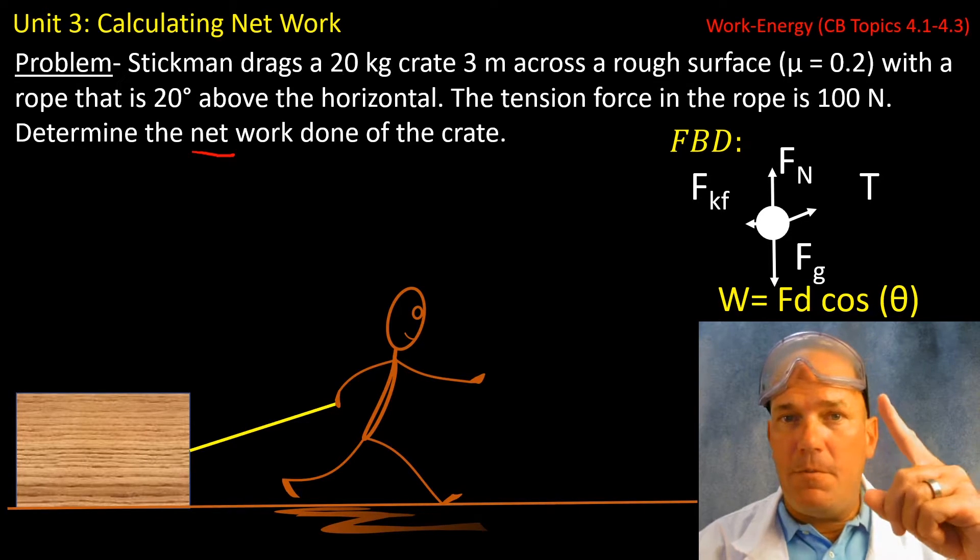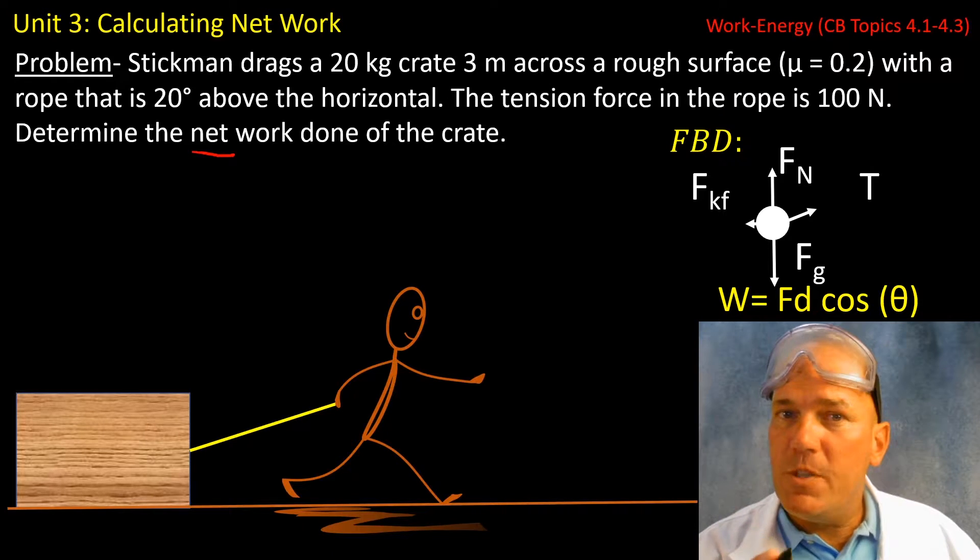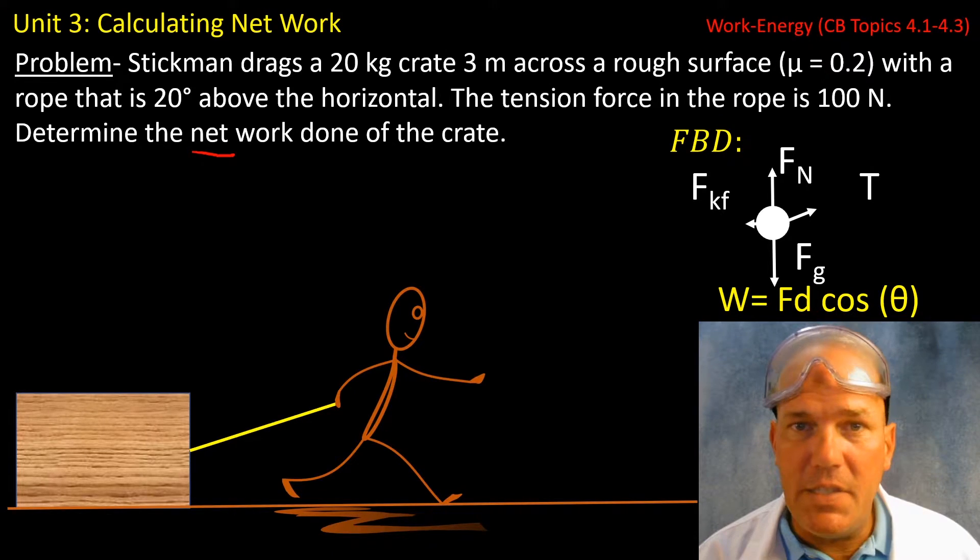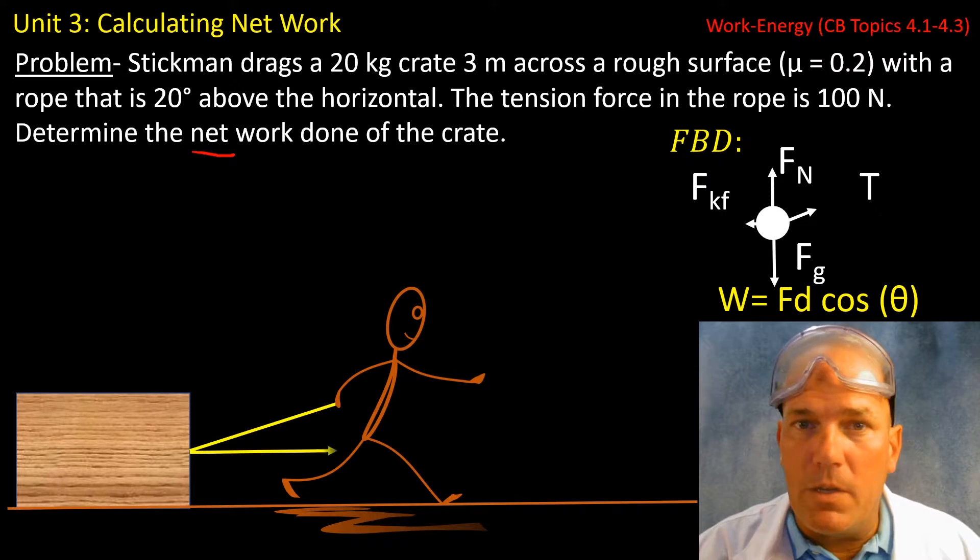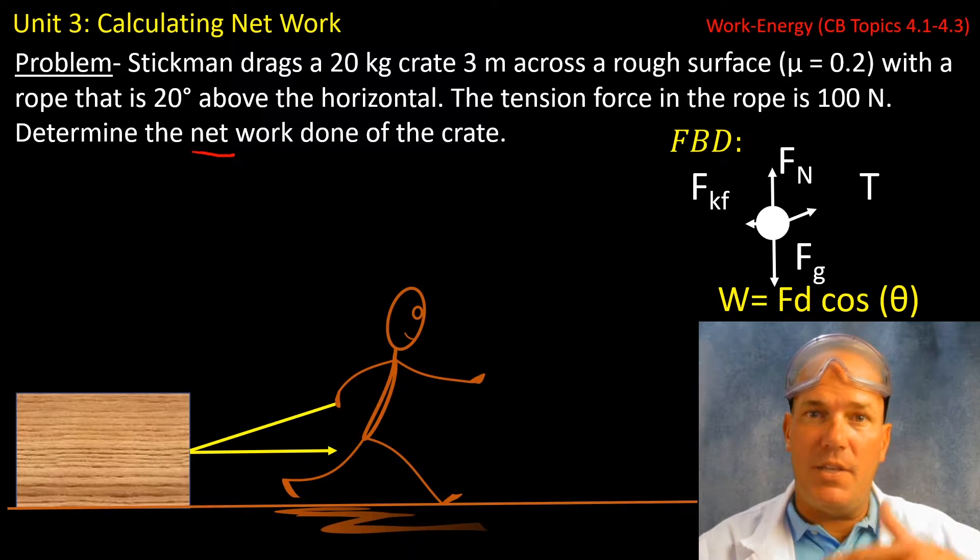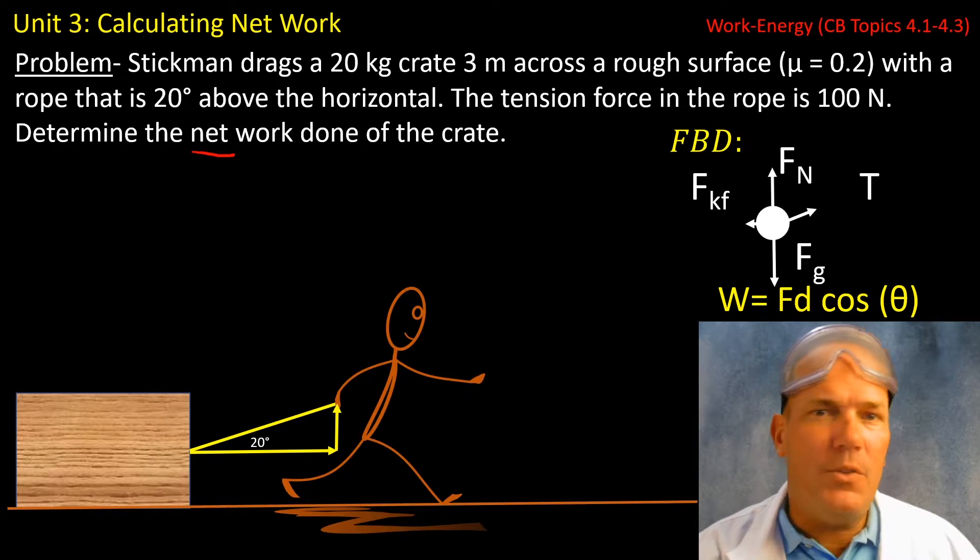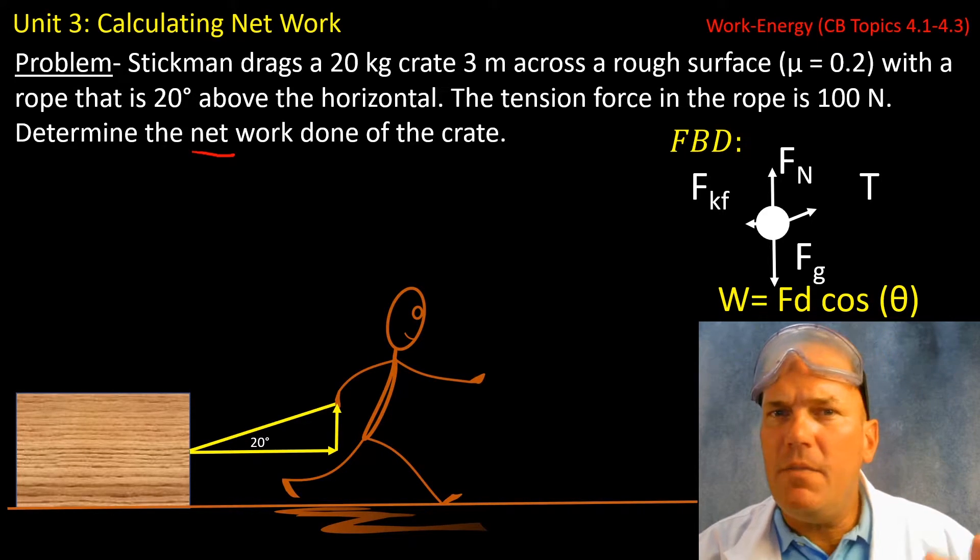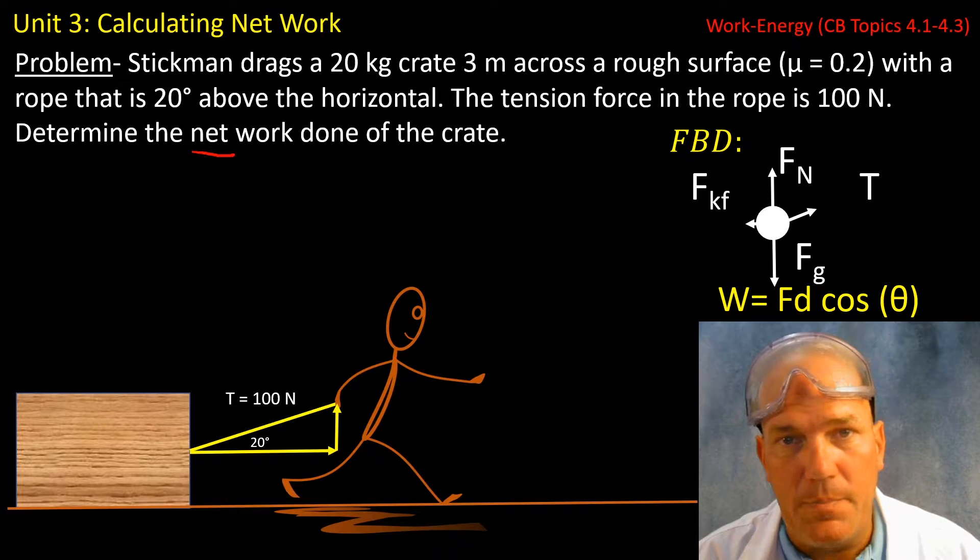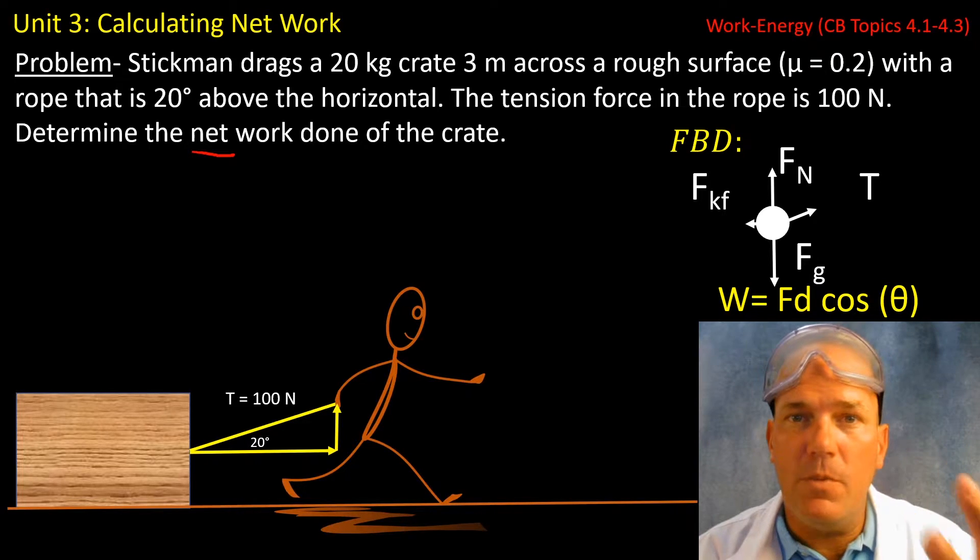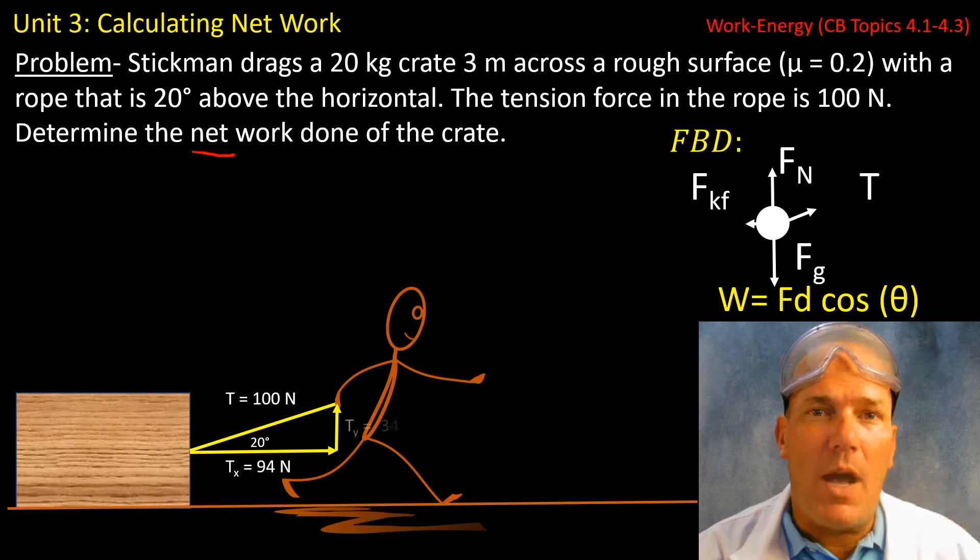As you can see, I have a free body diagram with the tension force unresolved so you do not see the components. Now let's look at Stickman and his rope. There is a rightward component to this tension and an upward component. We're told the angle is 20 degrees and the hypotenuse or resultant vector is 100 newtons. Using trigonometry, you can resolve this 100 newton force into both the x and y components.